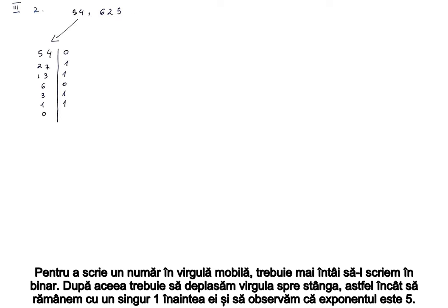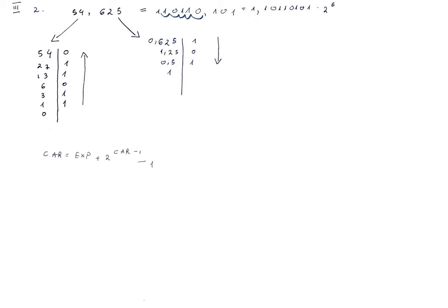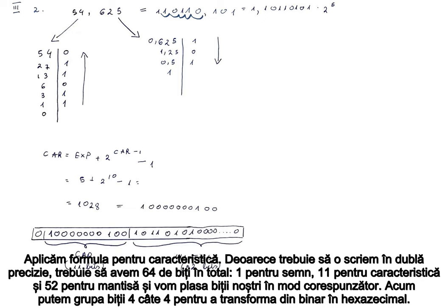To write our number in floating point, we first need to write it in binary. After that, we need to shift the comma to the left such that we're left with only one 1 before it, and we can observe that the exponent is 5. We apply the formula for the characteristic. Because we need to write it in double precision, we need to have 64 total bits: 1 for the sign, 11 for the characteristic, and 52 for the mantissa. So we will place our bits accordingly. Now we can group the bits 4 by 4 to transform from binary to hexadecimal.